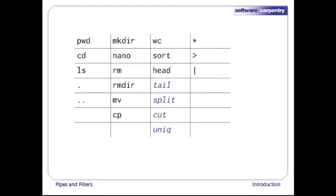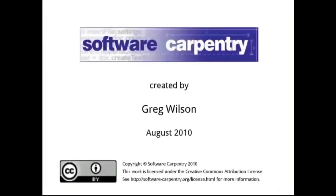We've also met three more special characters: the pattern-matching wildcard star, redirection with >, and most important of all, the pipe, which allows us to connect processes together. Once this episode is over, please take a moment to find out what two other characters do: < which redirects input, and ?, a wildcard that matches a single character instead of any number. In our next episode, we'll have a look at how Unix controls who can do what to files and directories.